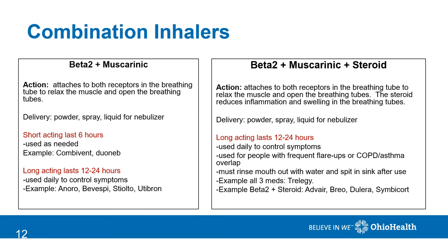These medicines can be combined for even stronger effect. They can be delivered through powders, spray, or liquids for the nebulizer, and come in short- and long-acting versions. The short-acting version lasts about six hours and is used as needed. Examples include Combivent or DuoNeb for the nebulizer machine. Long-acting lasts 12 to 24 hours and must be taken regularly to control symptoms. Examples include Anoro, Bevespi, Stiolto, and Utibron.